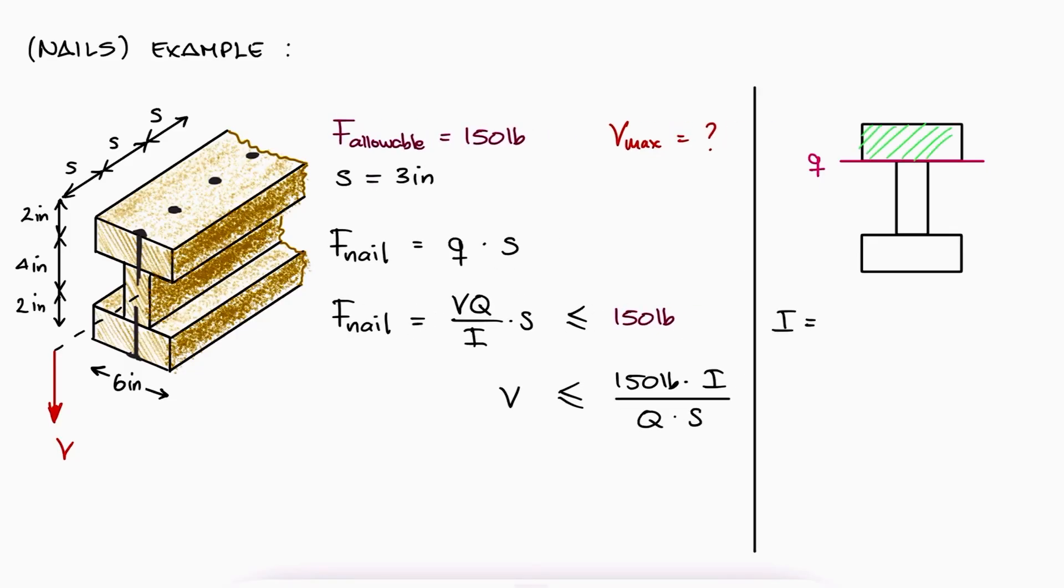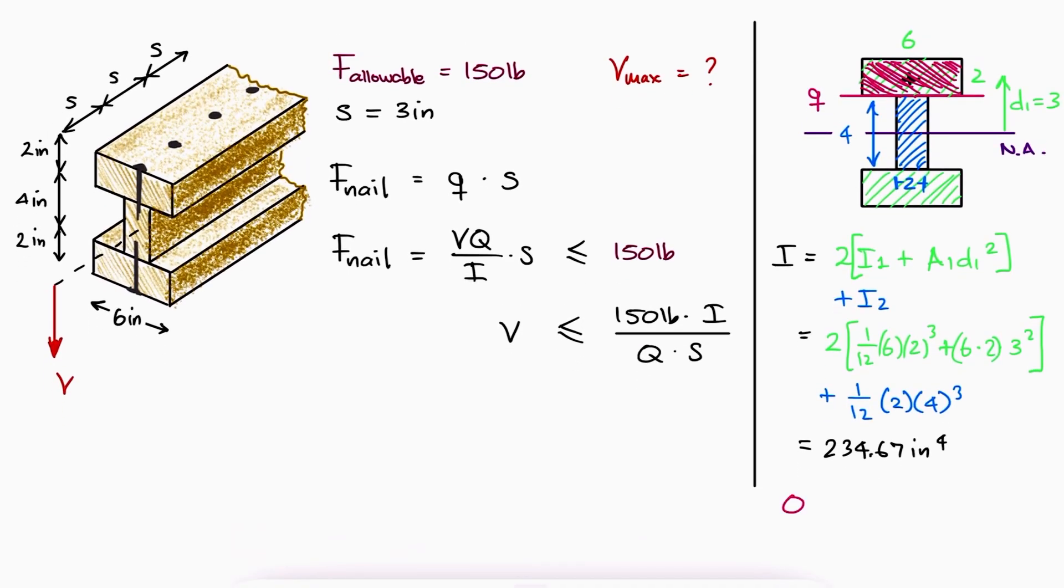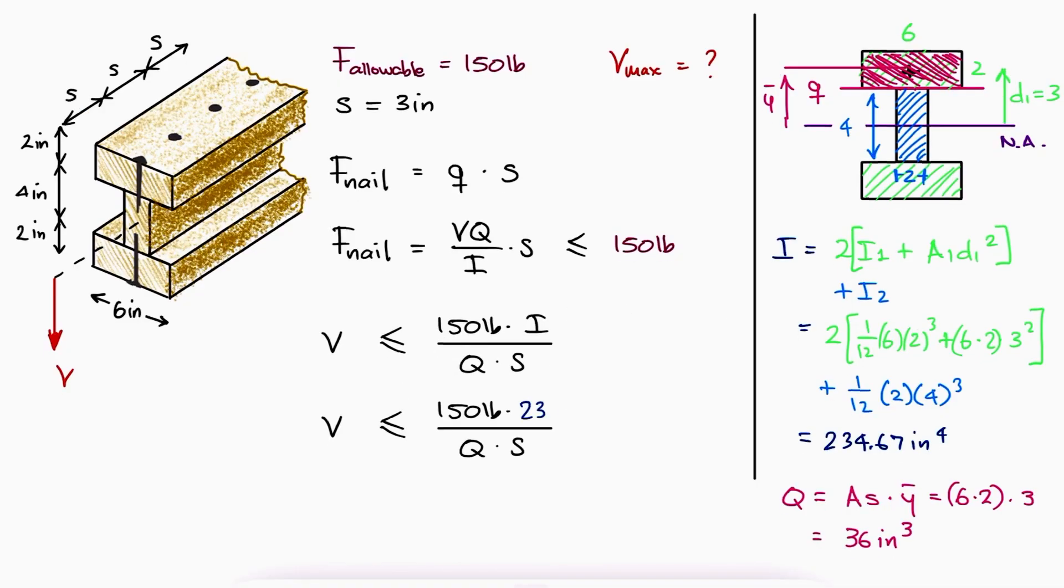The second moment of area is found using the parallel axis theorem, link to that video if you need a refresher, and Q is the first moment of area for the shaded area, which can be the top or the bottom section at the plane for the shear flow. If we choose the top, Q is the area of the top rectangle times the distance from the neutral axis to the centroid of that rectangle. Substituting all values, we find that the shear force should not be greater than 326 pounds.